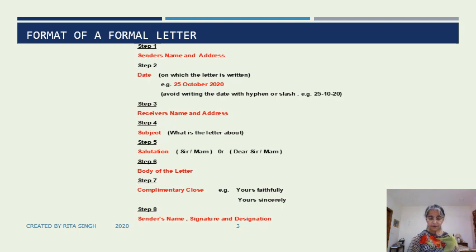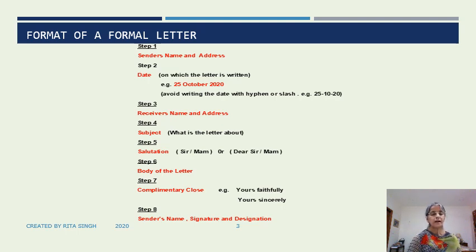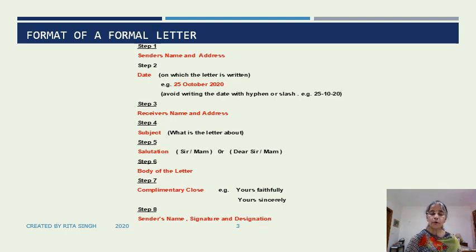Children, please note that the subject and the salutation can be interchanged. That is, the salutation can be written before the subject, or the subject can be written before the salutation. The next step of the format of the formal letter is writing the body of the letter. This is the most important section of the letter as it contains the actual message. We will discuss the body of the letter in detail in our next slide. After the body of the letter, after leaving a line at the extreme left hand side, the complimentary close is written.